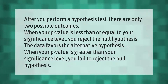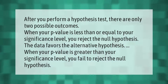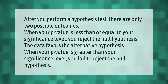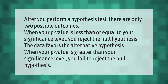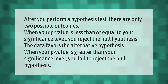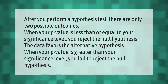After you perform a hypothesis test, there are only two possible outcomes. When your p-value is less than or equal to your significance level, you reject the null hypothesis — the data favors the alternative hypothesis. When your p-value is greater than your significance level, you fail to reject the null hypothesis.